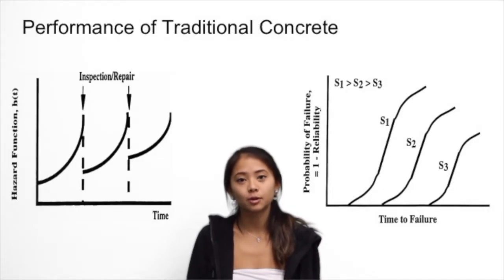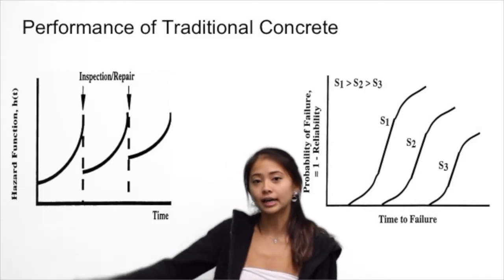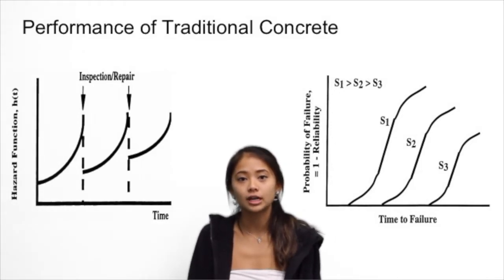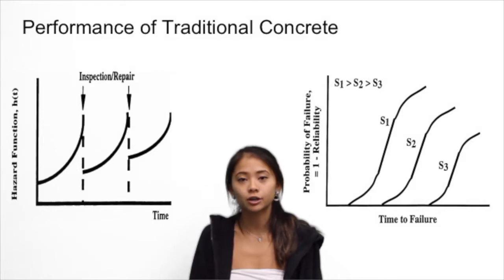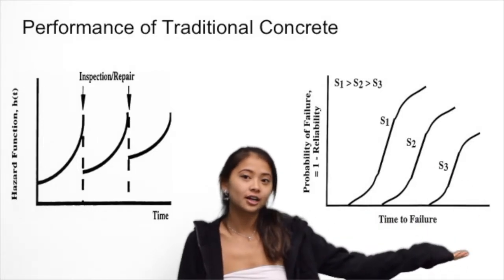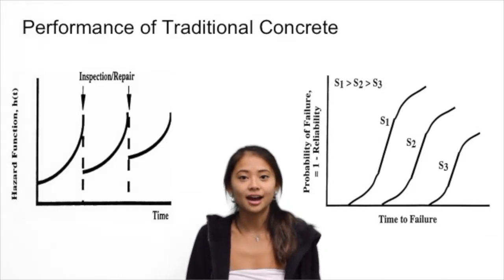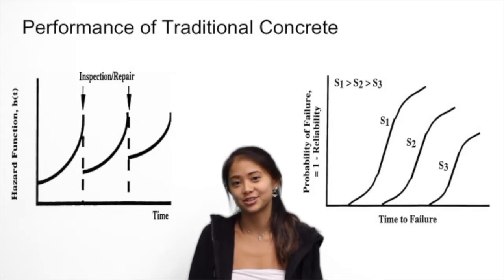Now we'll look at the performance of traditional concrete. The graph on the left has time on the x-axis and a hazard function — basically the stability of the concrete — on the y-axis. As you can see, after each inspection and repair, the hazard function increases until a point where the concrete can no longer be repaired. The graph on the right shows time on the x-axis and probability of fracture on the y-axis. As stress on the concrete increases, it has a higher probability of fracturing.